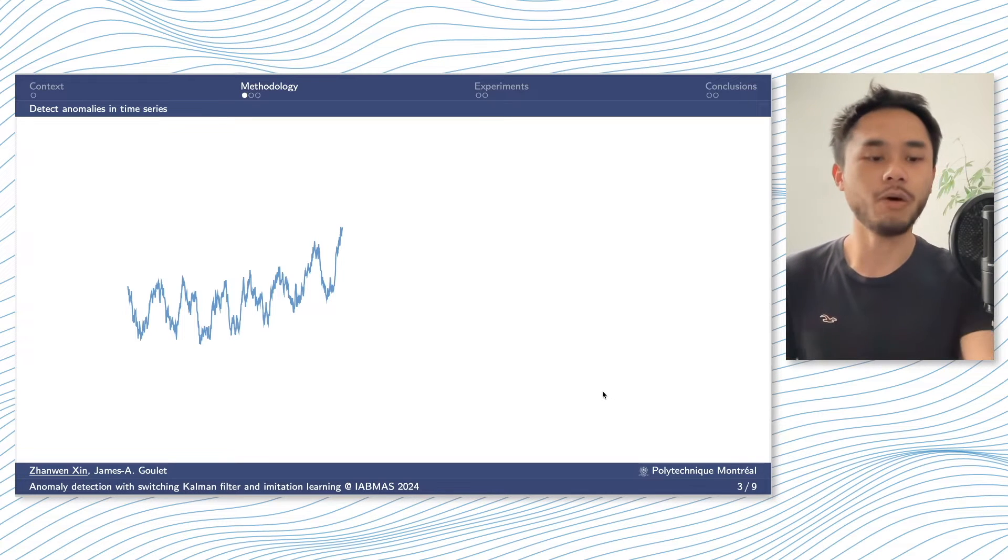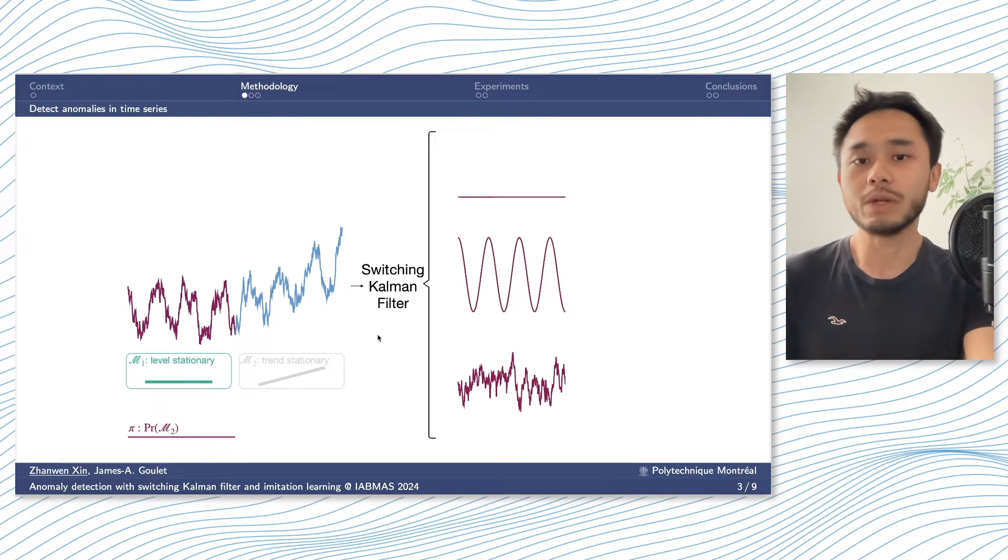When the time series is non-stationary, it becomes a little bit more complicated. Here, we would need a switching Kalman filter, where we have two models competing with each other on one time series. Here, we have level stationary model, as well as the second one called trans-stationary.